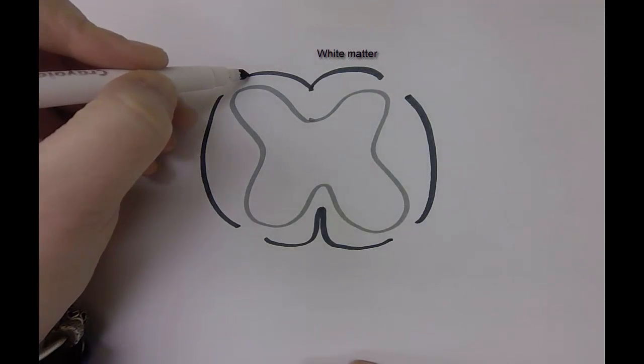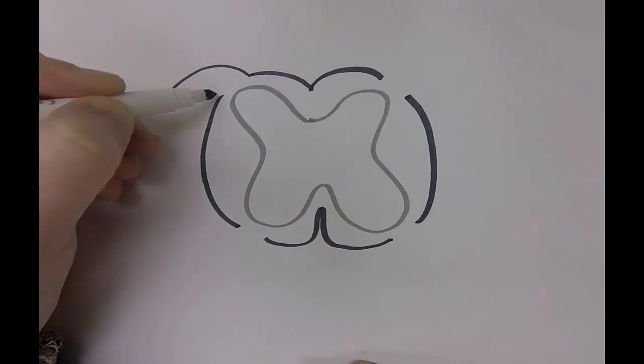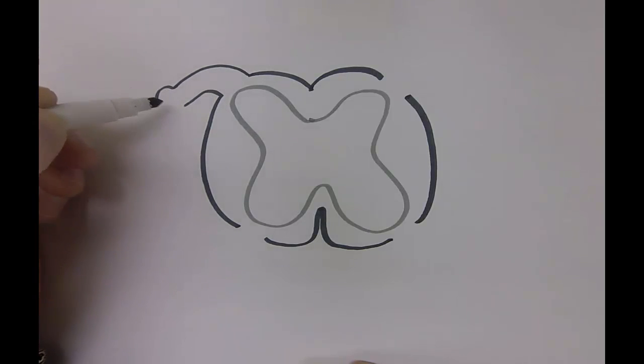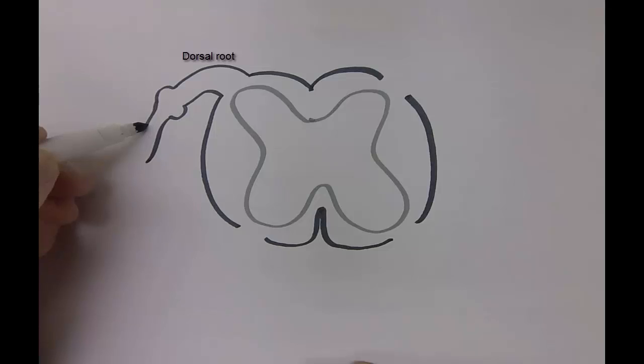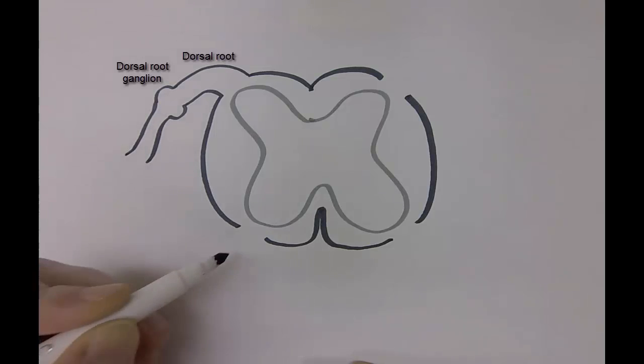The first structure we'll draw is the dorsal root. On the dorsal root, you're going to find a bump, and the bump is called the dorsal root ganglion.